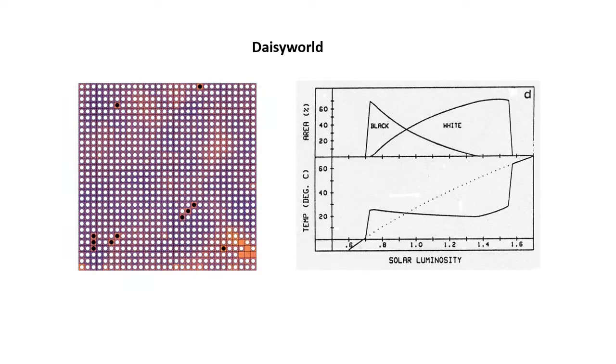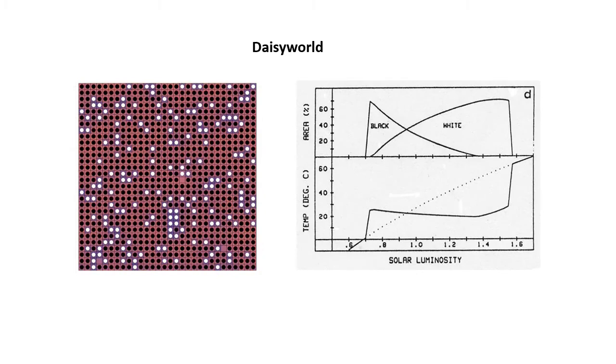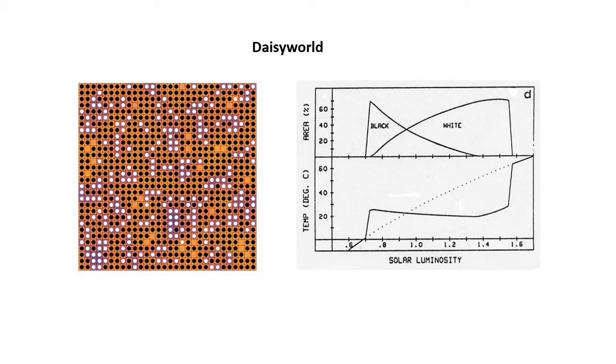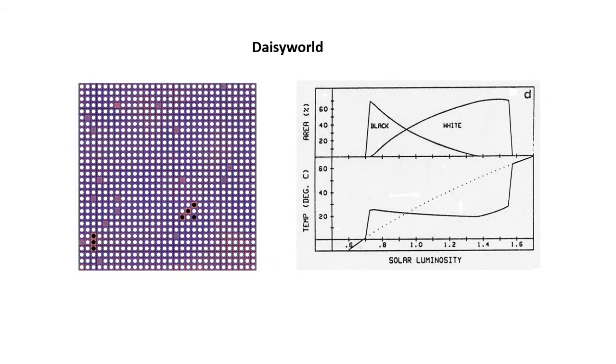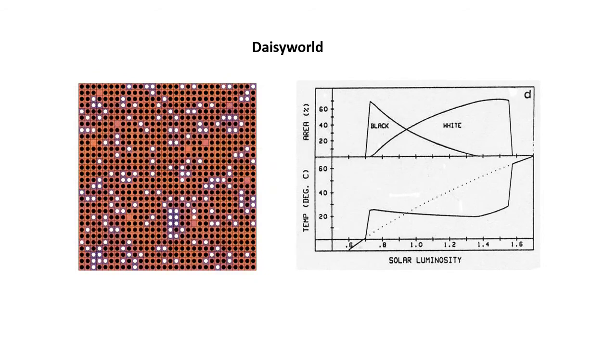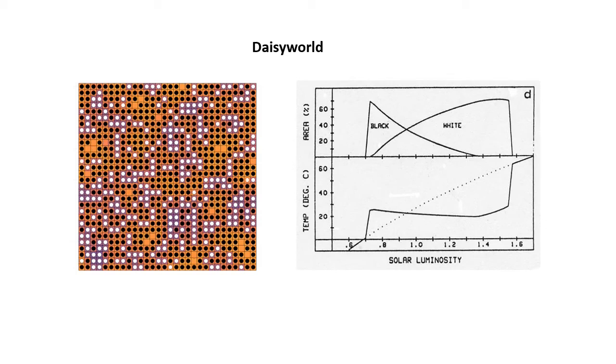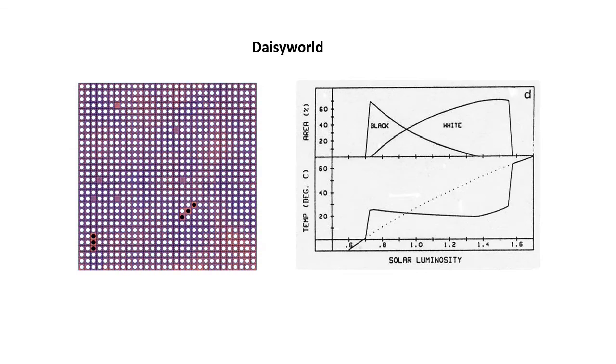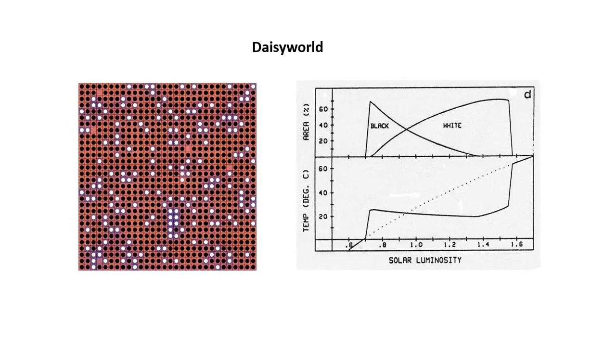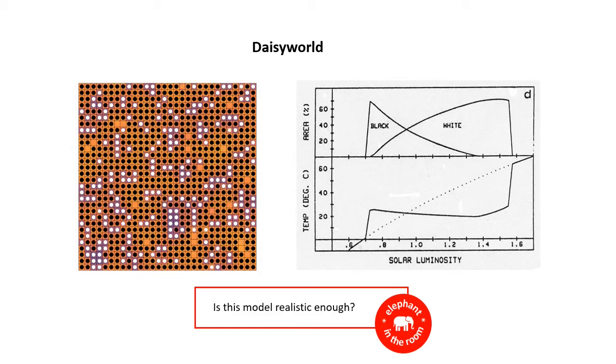And sure enough, the results showed that the temperature of daisy world, just as a result of changes in the abundance of black and white daisies, would remain fairly constant over great big changes in the Sun's output. So that was great, and it really helped to make the hypothesis easier to understand and more widely accepted. Even though it wasn't really definitive proof, it was more like proof of concept.